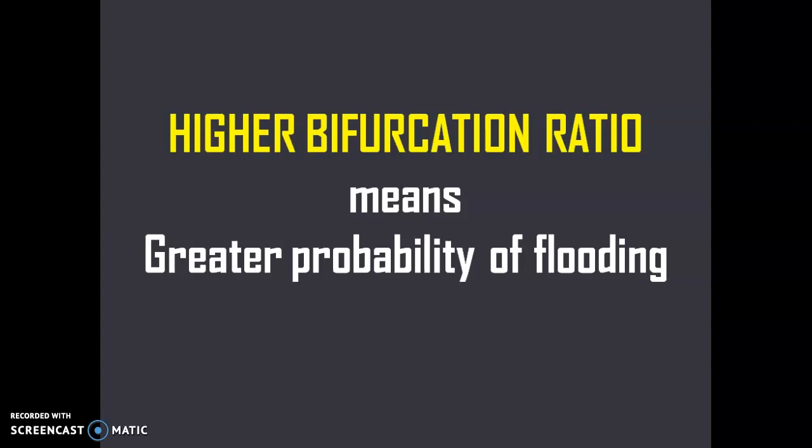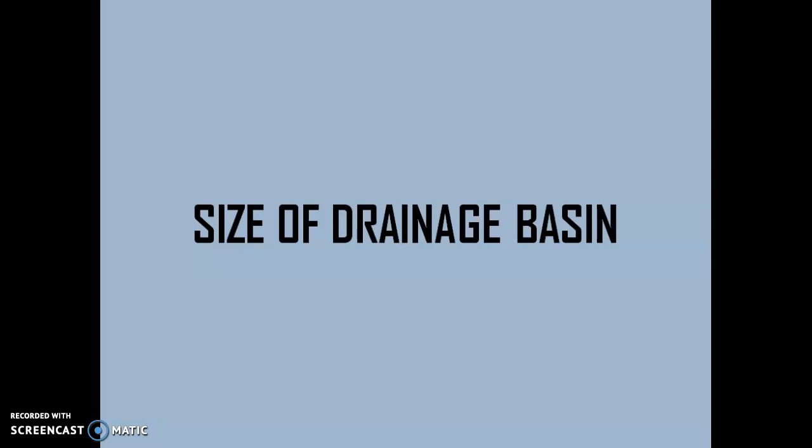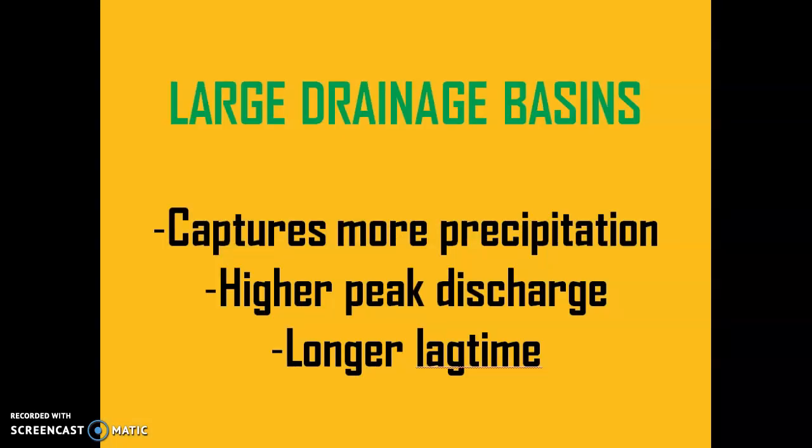In terms of the size of a drainage basin, larger drainage basins usually have a higher number of stream orders. Larger basins have a greater surface area and will capture a greater amount of precipitation, resulting in a greater peak discharge — a higher volume of water traversing the entire area. Given the larger area, there will be a greater distance for the water to cover, meaning it will take a longer time to flow over the basin, hence a longer lag time.